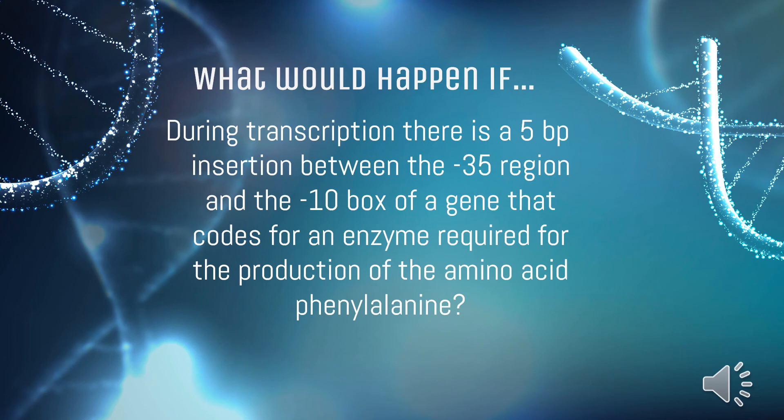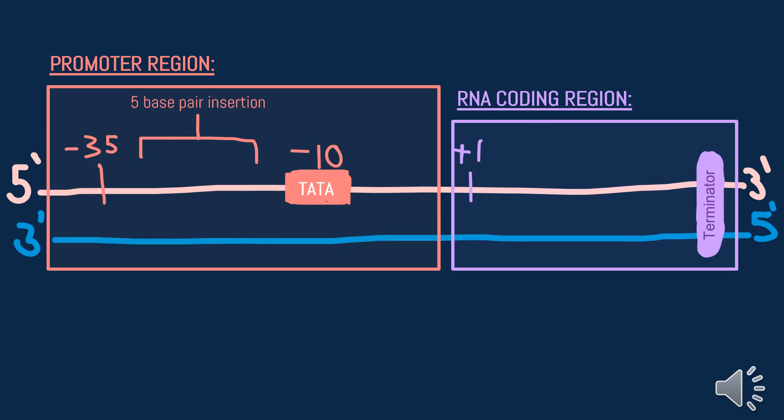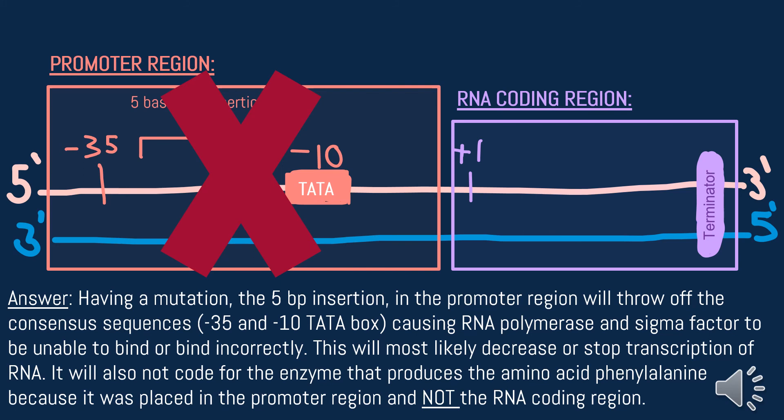Now let's look at a hypothetical situation. What would happen if during transcription there is a five-base pair insertion between the negative 35 region and the negative 10 box of a gene that codes for an enzyme required for the production of a chosen amino acid? Based on what was given to us about the five-base pair insertion, we know it falls into the promoter region of the DNA between the two consensus sequences, negative 35 and negative 10. Having a mutation in the promoter region will throw off the consensus sequences, causing RNA polymerase and sigma factor to not bind or bind incorrectly. This will decrease or prevent transcription of RNA. Also, it will not be able to produce the wanted amino acid because it wasn't placed in the RNA coding region.